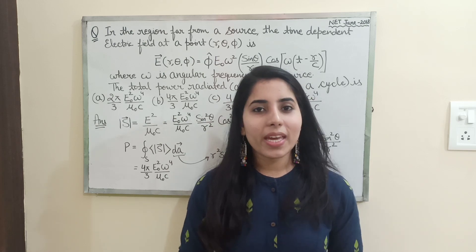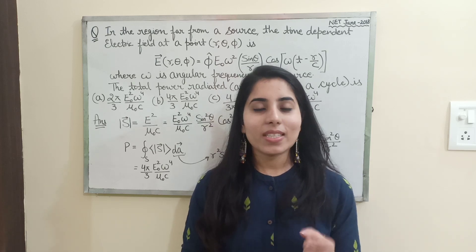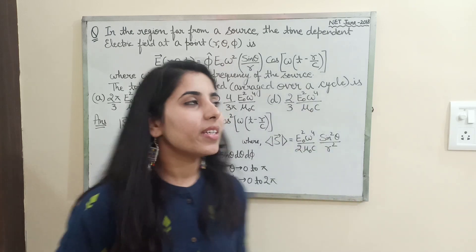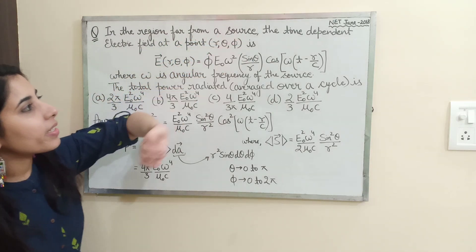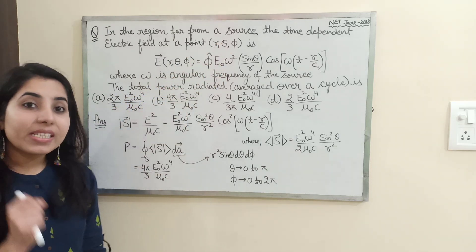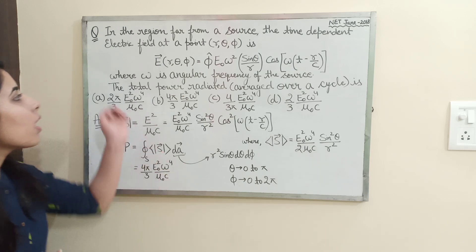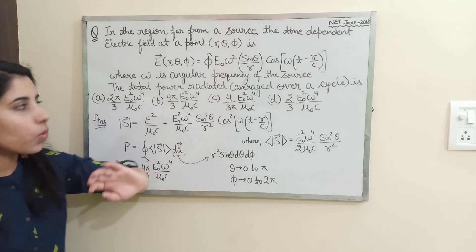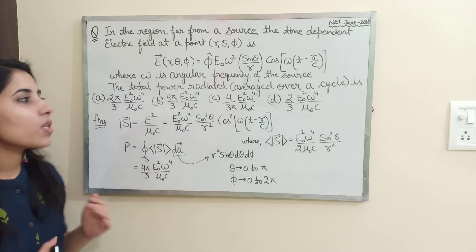Let's try to make electromagnetic theory a very simple and easy subject. The question is: in the region far from a source, the time-dependent electric field at a point (r, θ, φ) is given. Where ω is the angular frequency of the source, the total power radiated averaged over a cycle is what we need to find.